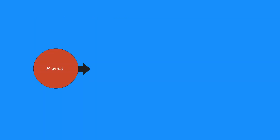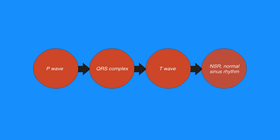The P wave, QRS complex, and T wave, together at proper intervals, are indicative of normal sinus rhythm, or NSR.